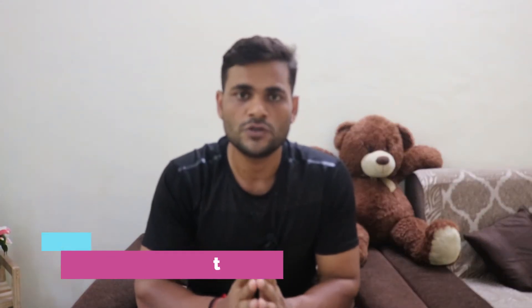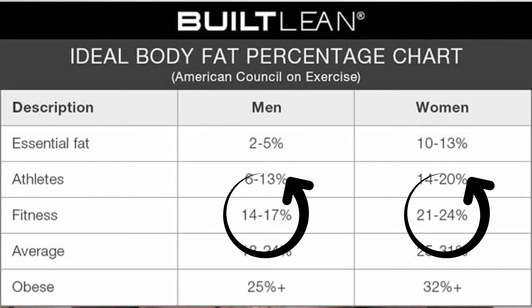The next step to achieve vascularity is to reduce your body fat percentage. Your veins will look more prominent when you have less body fat percentage under your skin covering your muscles.